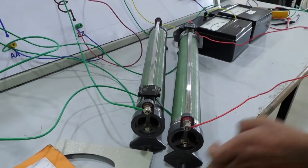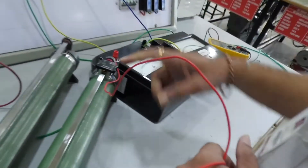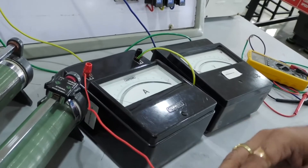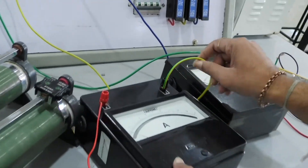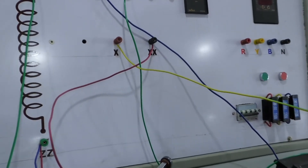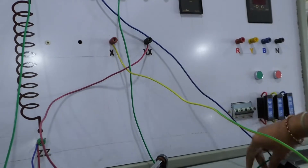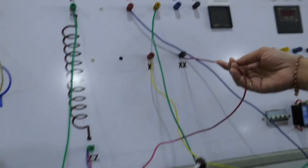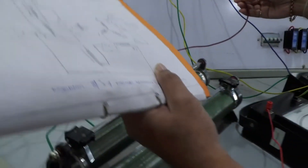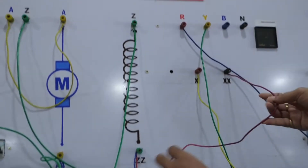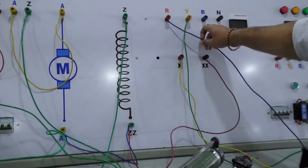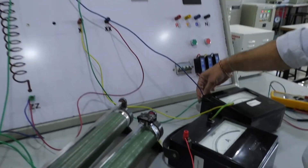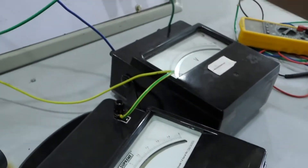From this rheostat, we have connected to the ammeter for taking the current readings. From this ammeter, we have connected to terminal X. Then we have connected XX to ZZ as per the circuit diagram. From R, it is connected to the voltmeter and the other end of the voltmeter is connected to Y.